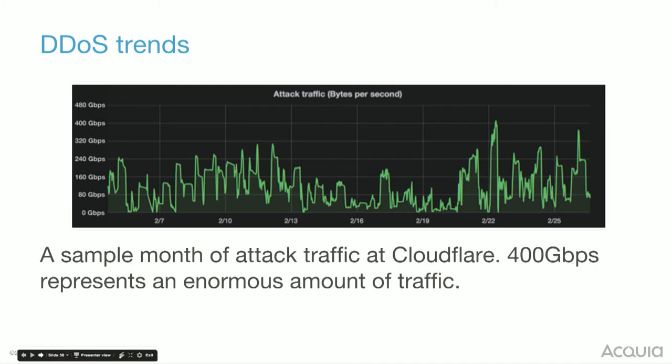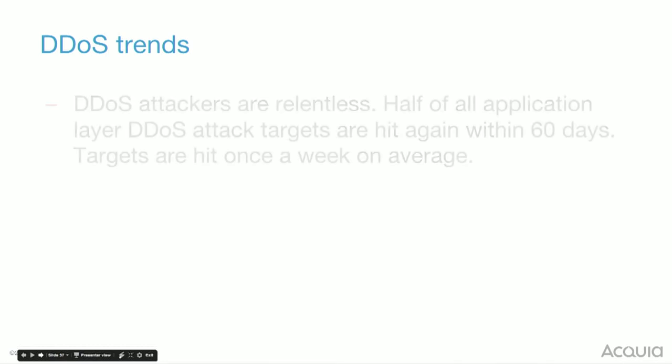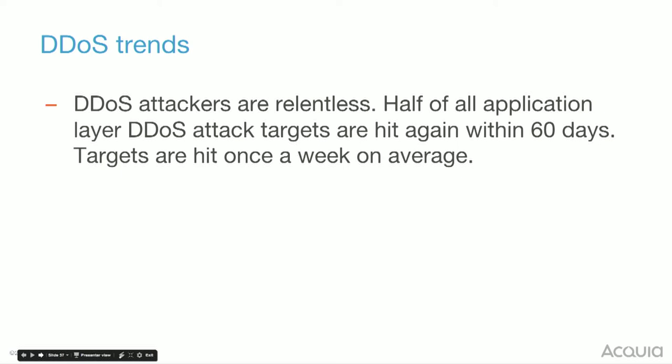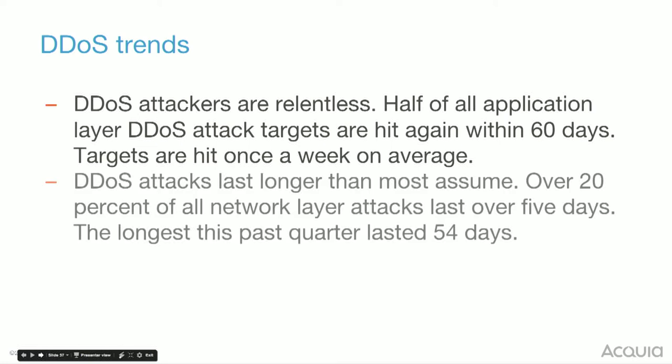These attacks are not small. DDoS attacks are relentless — half of all application layer attacks will happen again. So you think, ah, it's gone away, I don't actually need protection. Targets are hit once a week on average. Most people also think, oh, they'll be gone in half an hour. The longest attack was 54 days. And you need to ask yourself, is that really a length of time I can do without my business?